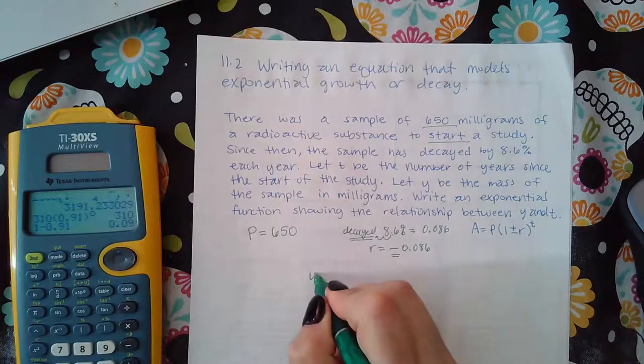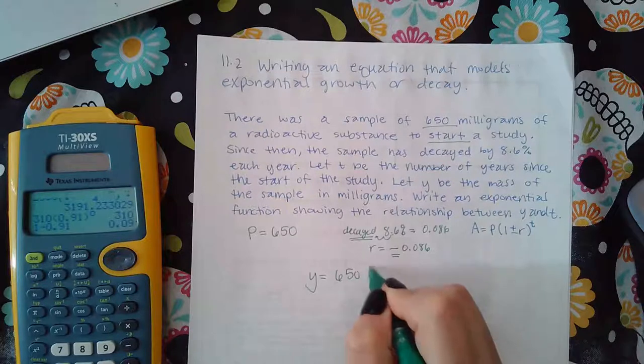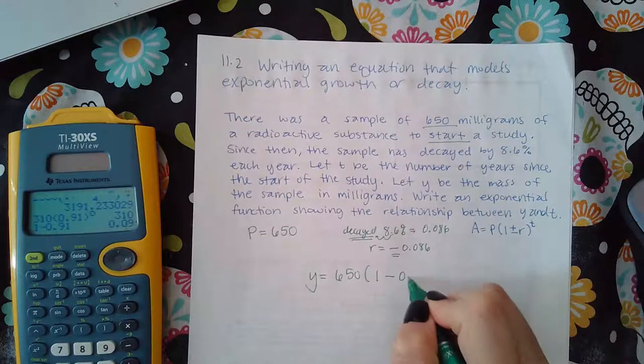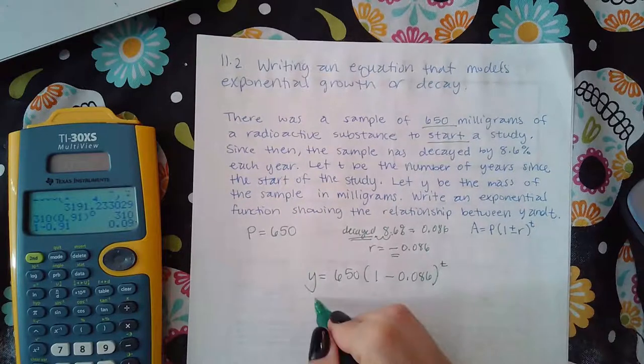So y is the mass of the sample after some time, so that will be like the a. And then the p I know is 650, and then the r I know is going to be negative 0.086, and then the t is still unknown.